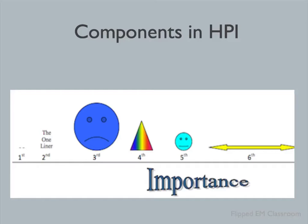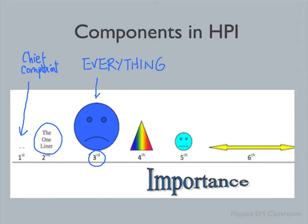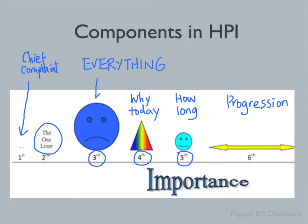Let's look at each of the components. First, the chief complaint. Then we go into a one-liner opening. Third, we want to know everything about the patient. Then, why today? After that, how long they've had the chief complaint for. Lastly, what the progression of the chief complaint is. We'll discuss each one by one.